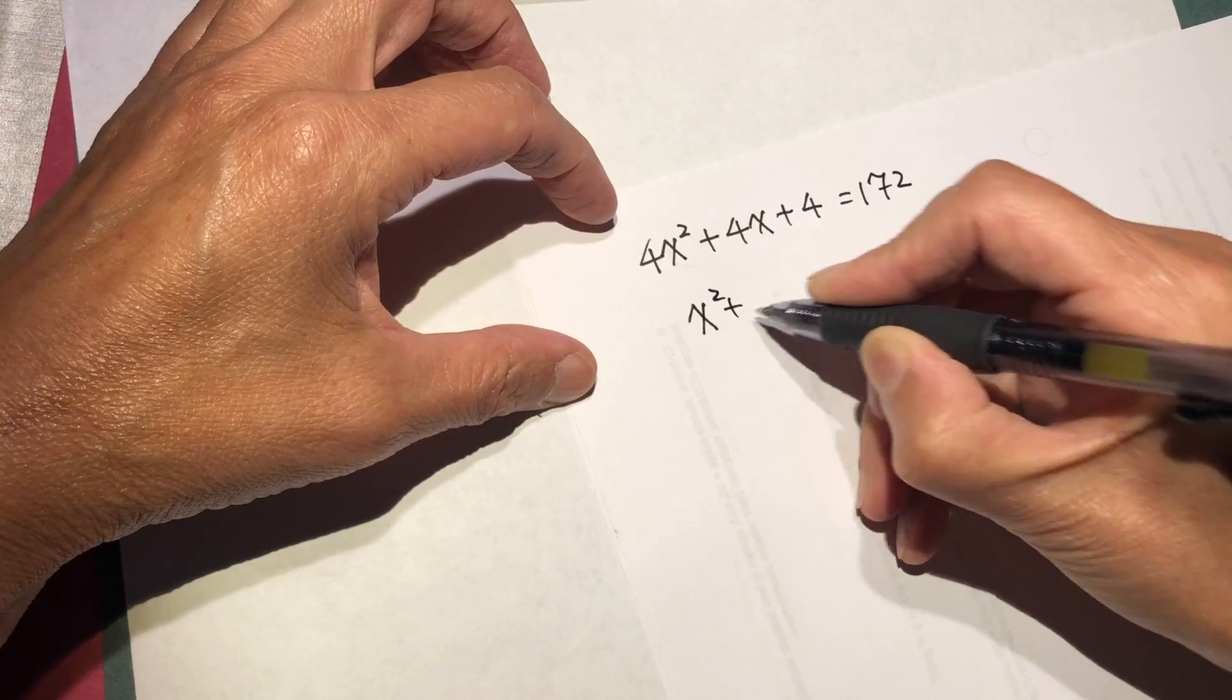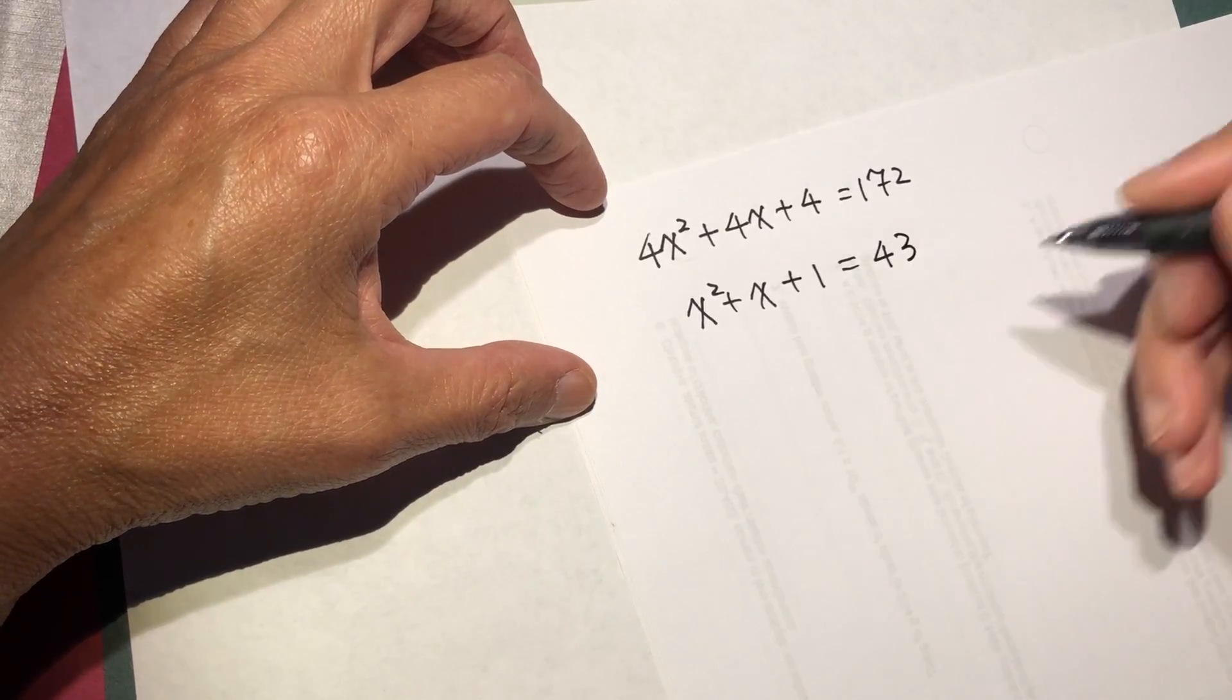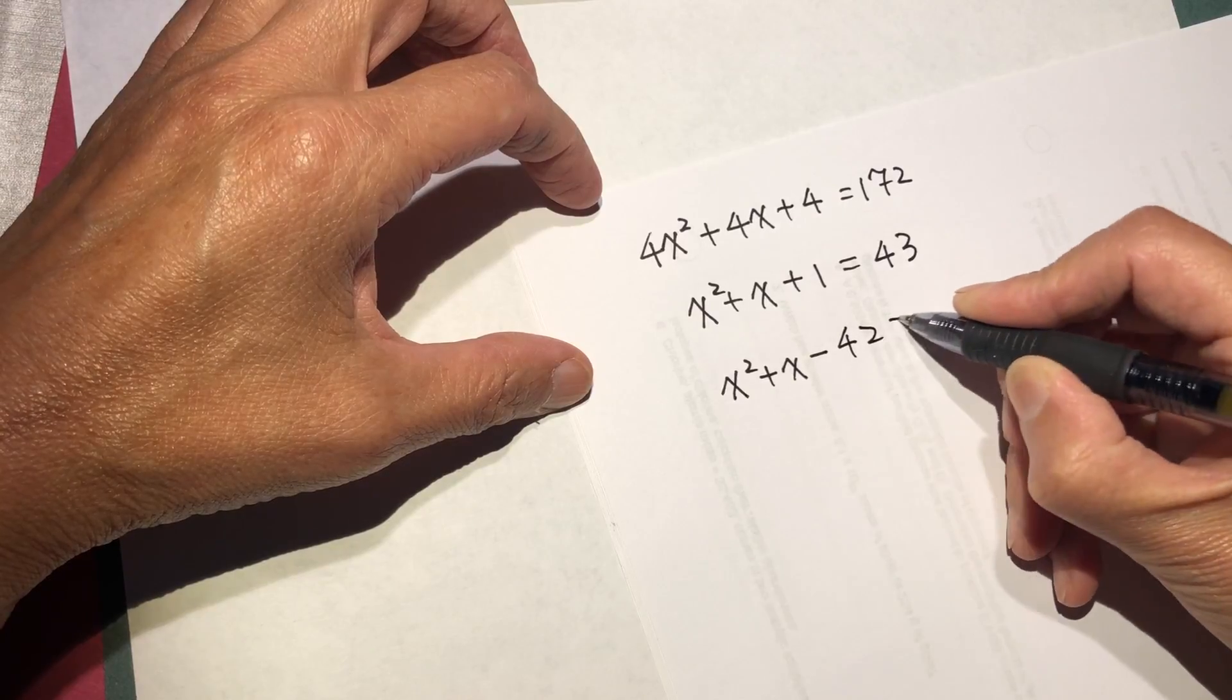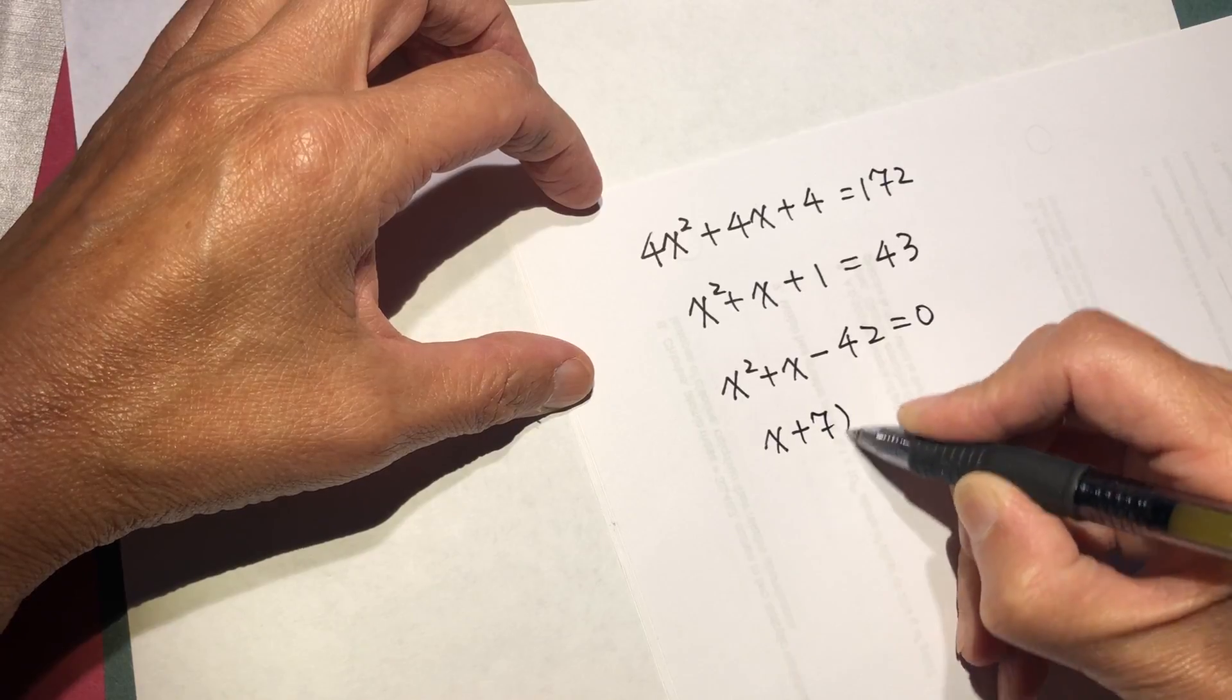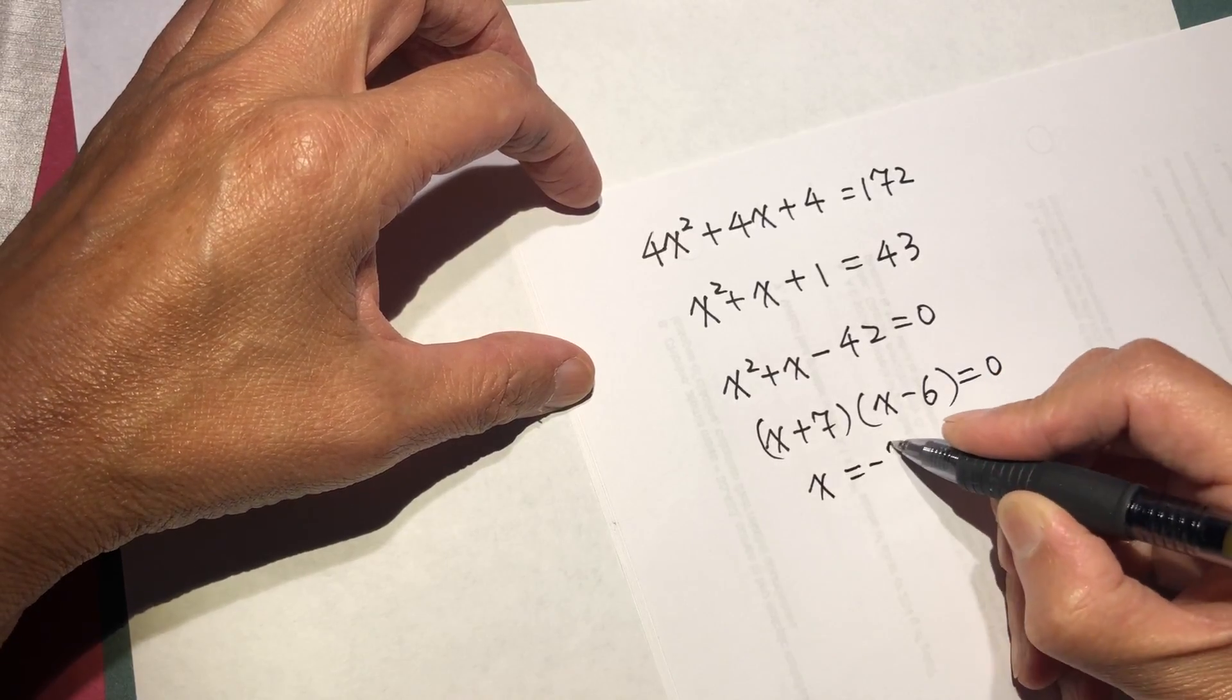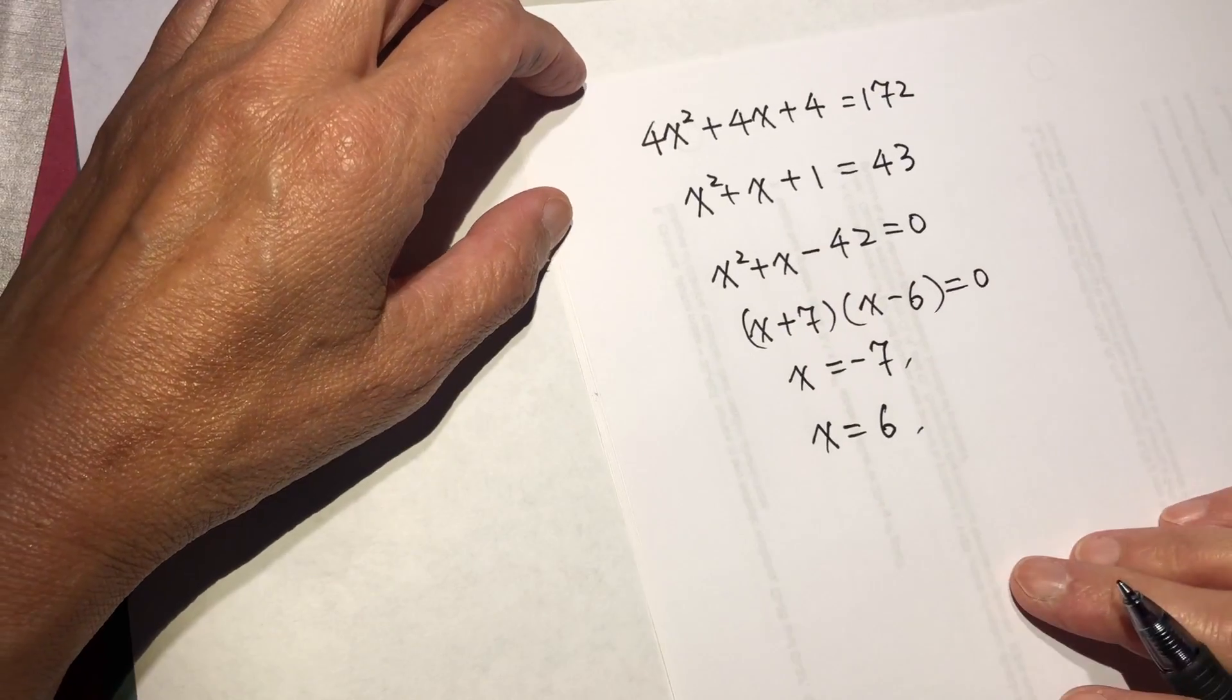So x squared plus x minus 42 equal to 0. x plus 7 times x minus 6 equal to 0. x equals negative 7 and x equals 6. Two answers, two solutions.